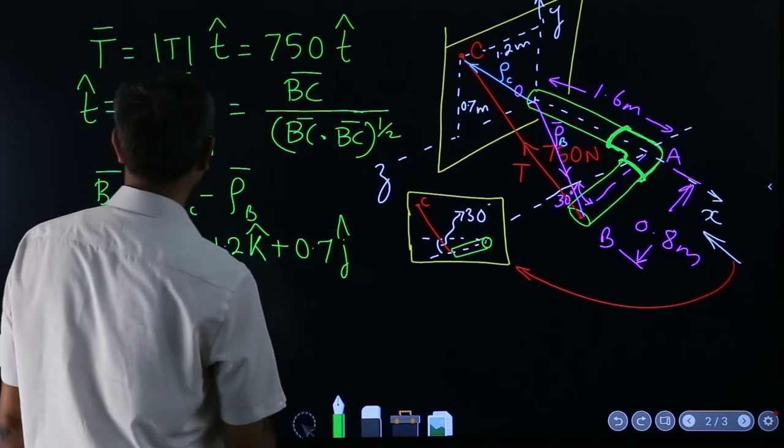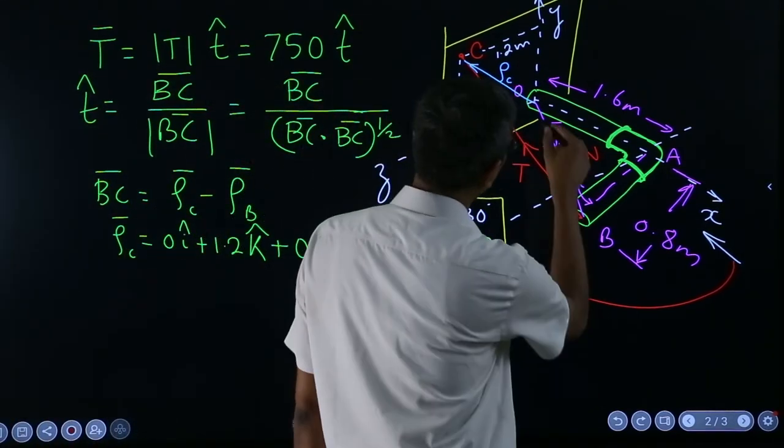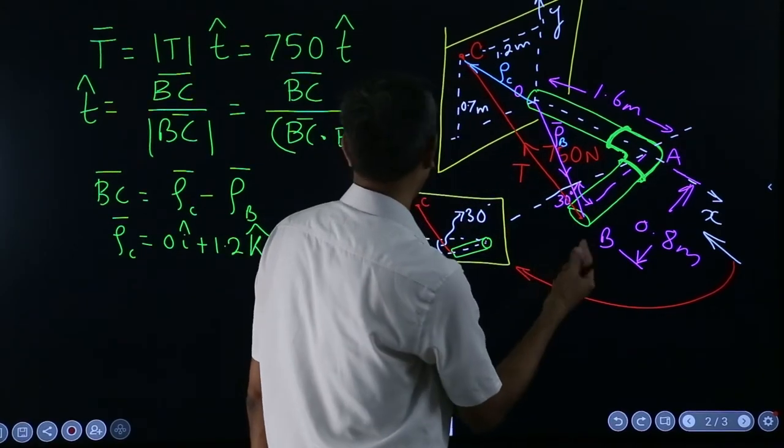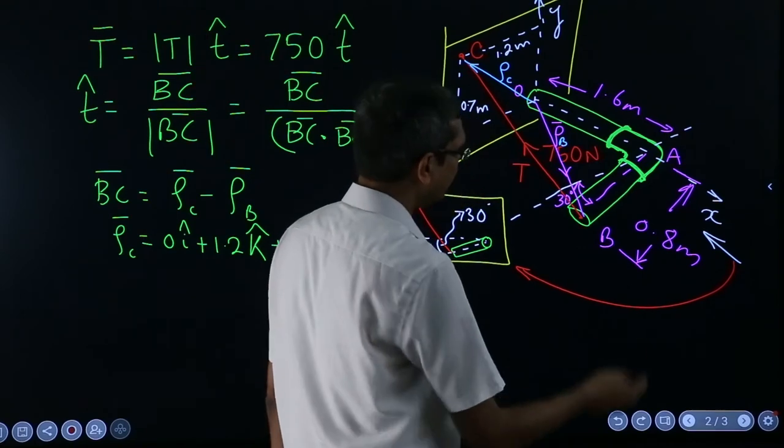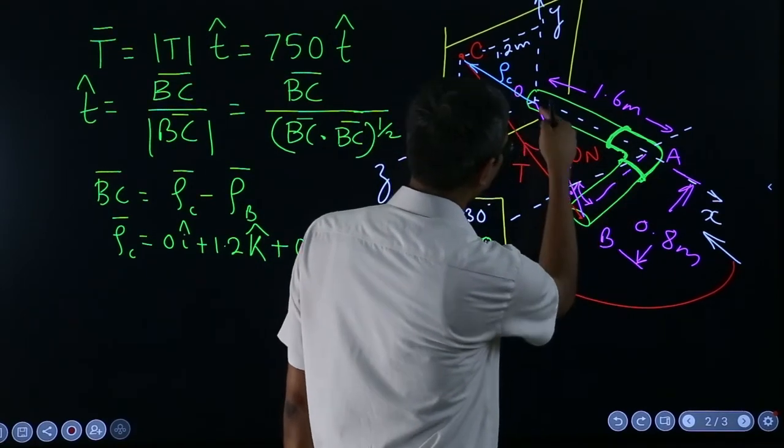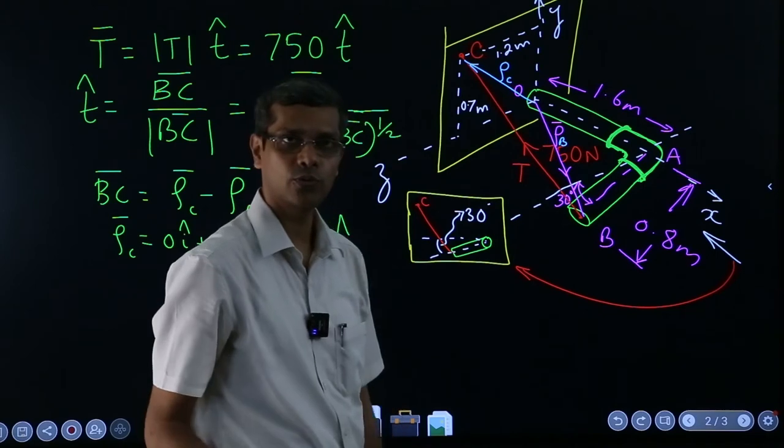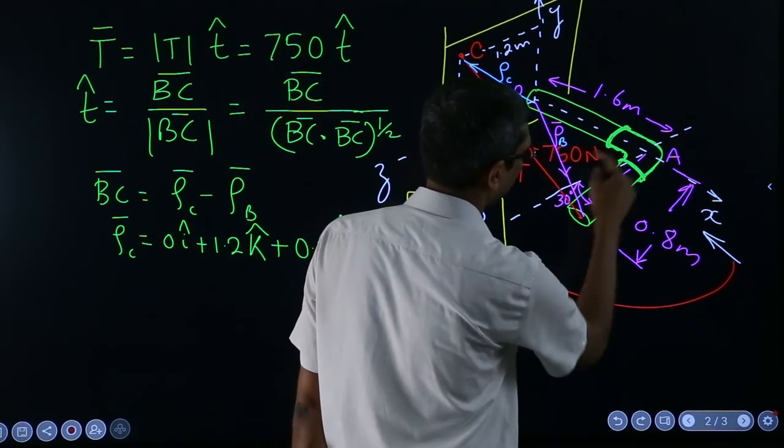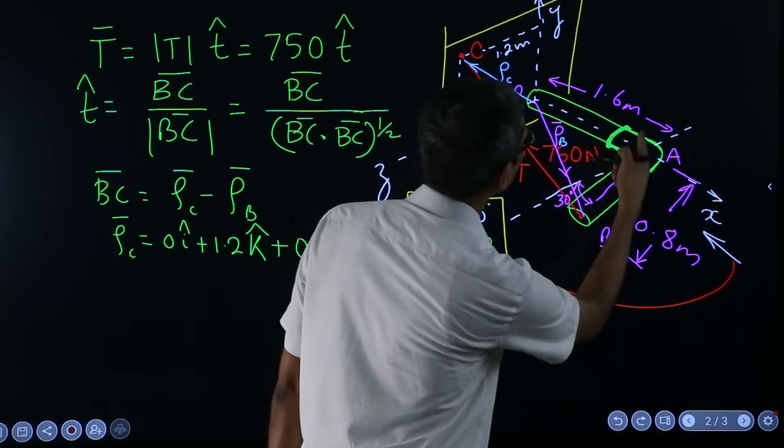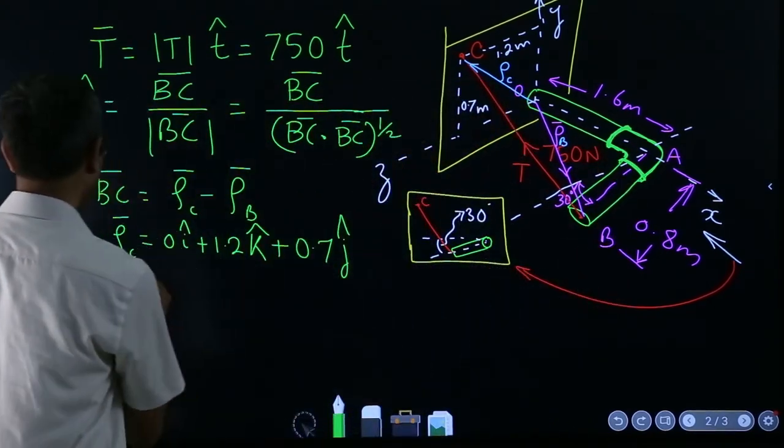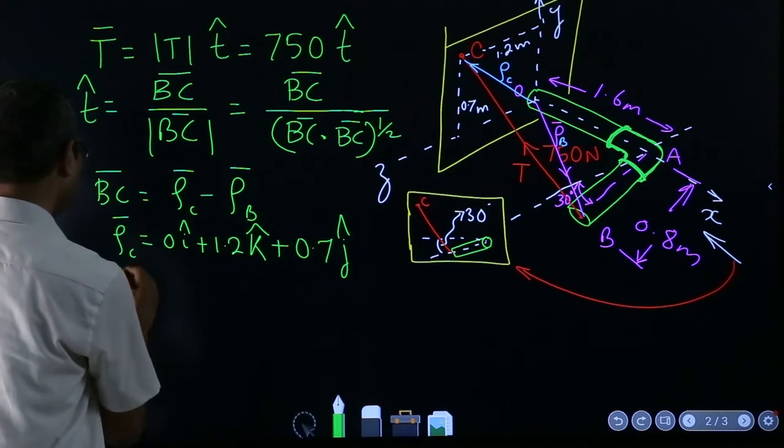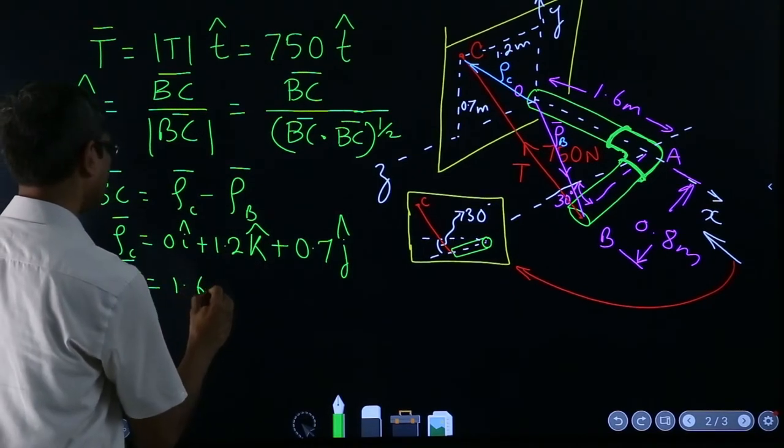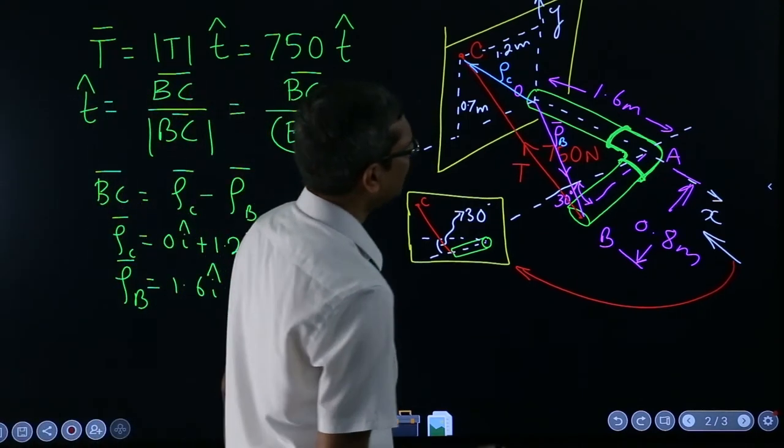What about ρB? To get ρB, it's slightly difficult. We have to travel first in x direction, because tail to tip we have to move parallel to the axis. First let us move in the positive x direction this much. How much? 1.6 meters. So to find out ρB we have to come 1.6i in the positive direction.